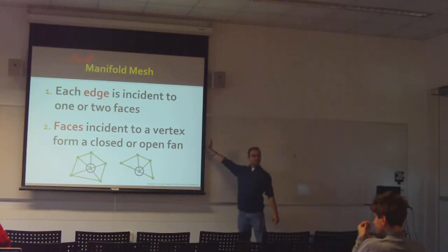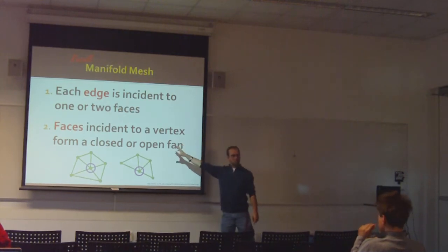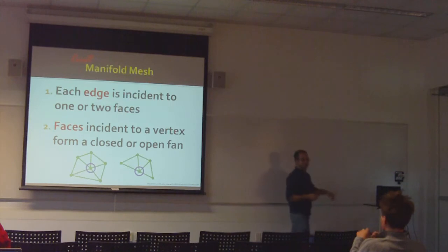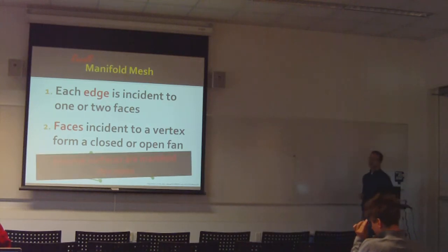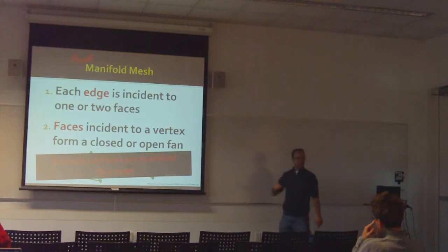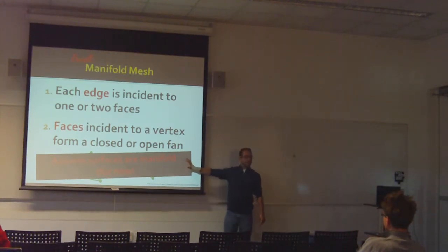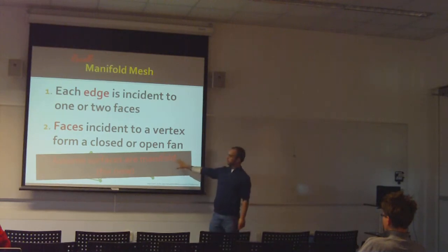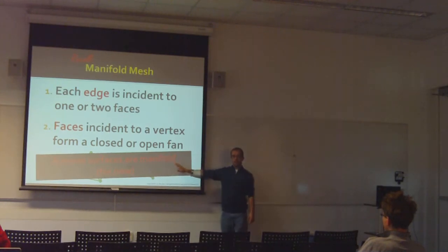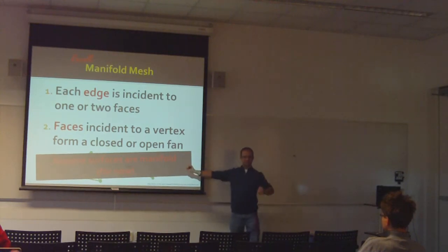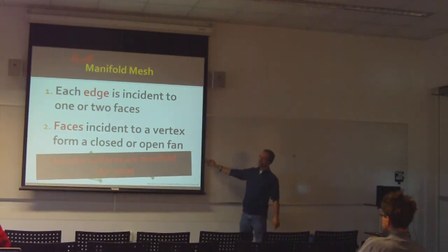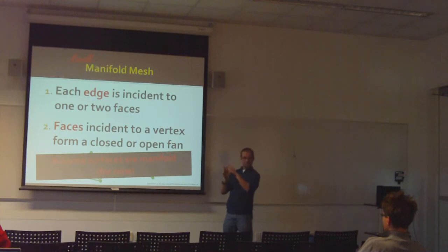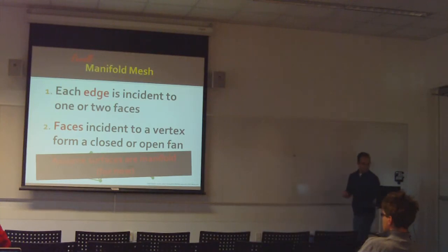The situation that we can't have looks something like this — where you have a point and you have two triangles that sort of bow-tie out from that point. This creates a location right in the middle that doesn't look like a surface, so we don't allow it. So this is going to be our basic definition for a manifold mesh: a collection of edges, triangles, and vertices hooked together the usual way, satisfying these two properties. For now, we'll assume that most surfaces are manifold.